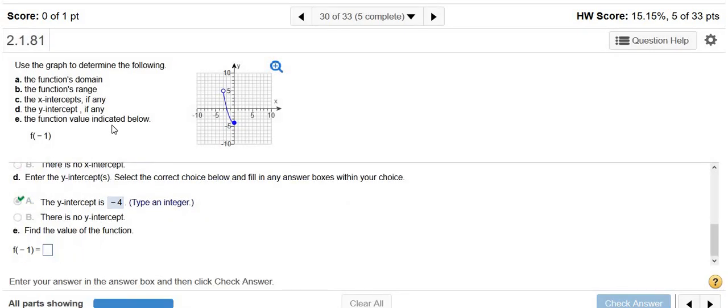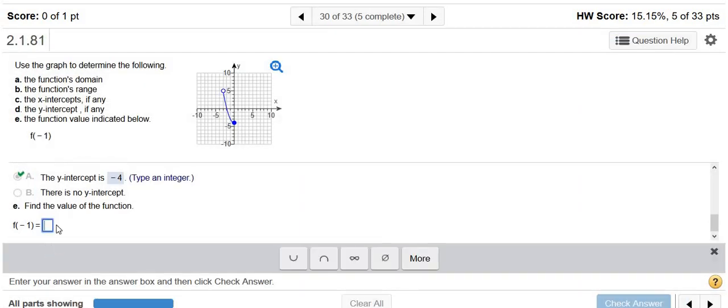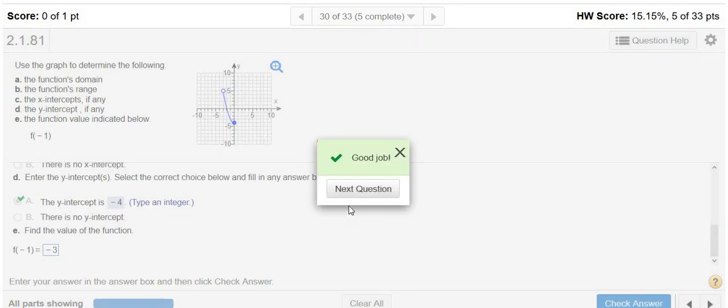And then f of negative 1. So f of negative 1 is the y-value when x is negative 1. So here's negative 1 where my cursor is. So 1, 2, 3. So negative 3. That's the y-value when x is negative 1. So negative 3 is the answer. Let's try it. So negative 3. Check answer. And that's it.